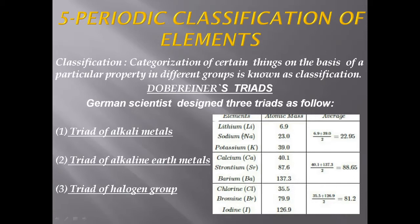For the alkali metals triad: Lithium has atomic number 3 and atomic mass approximately 7. Sodium has atomic number 11 and atomic mass 23. Potassium has atomic number 19 and atomic mass 39. According to Dobereiner, the mean of the mass of lithium and potassium — (6.9 + 39) / 2 — gives approximately 22.95, which is nearly 23, the actual atomic mass of sodium. So this law is applicable here.